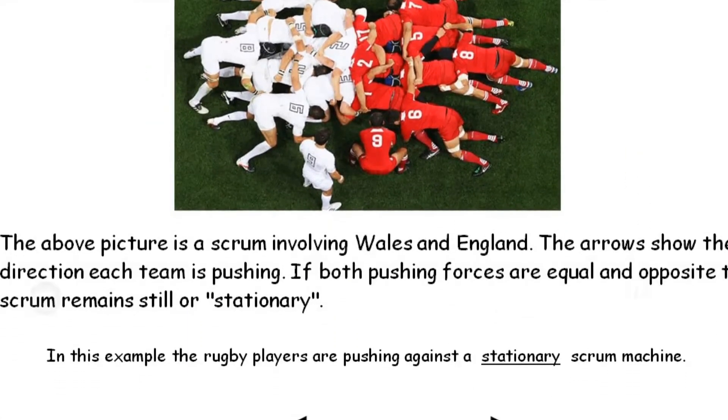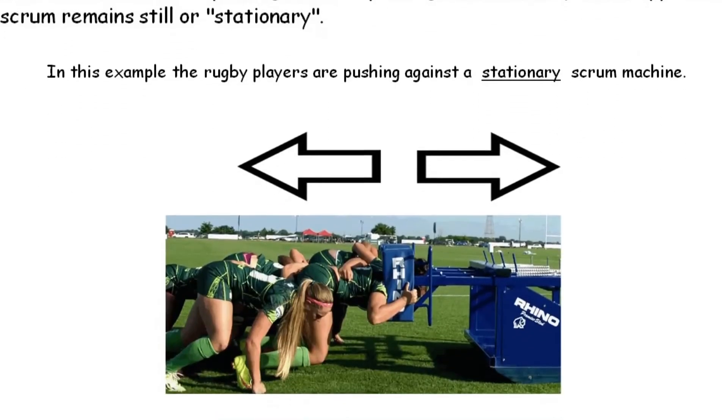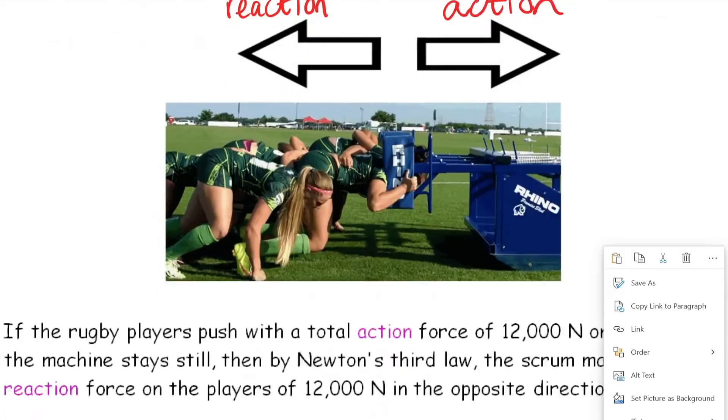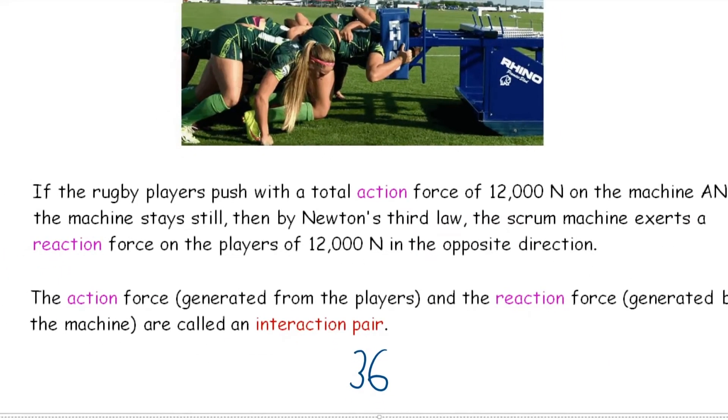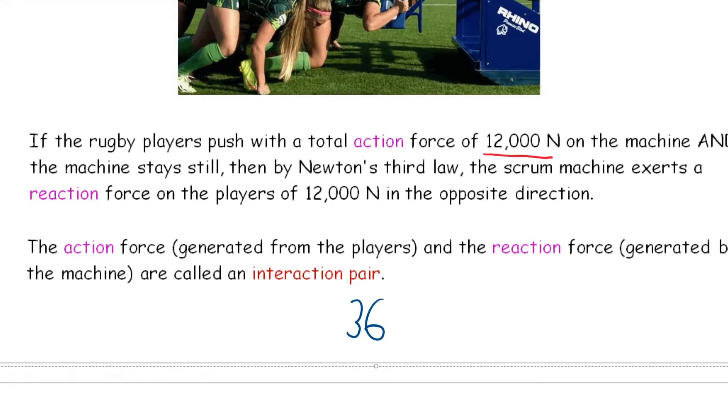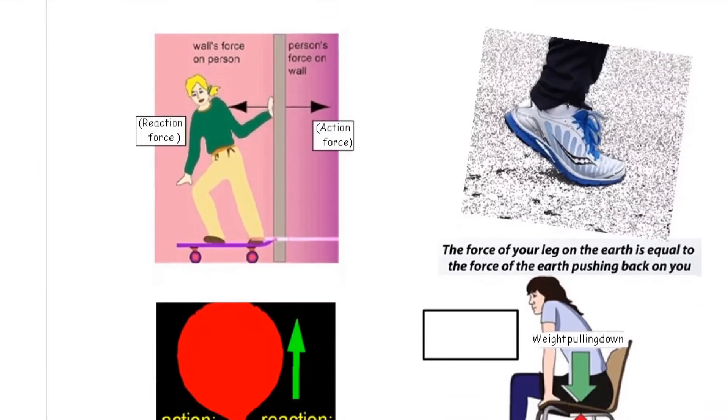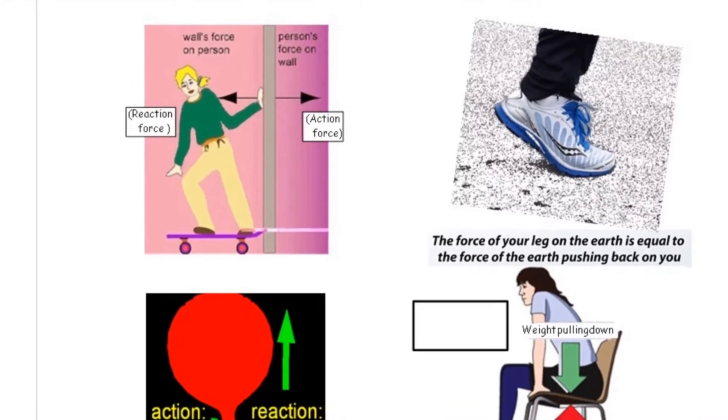When we talk about Newton's third law of motion, we talk about action and reaction. In this case the action would be the pack pushing against this scrimmage machine, and the reaction is the scrimmage machine pushing back on the pack. Again, it's stationary. If we look at this, they've given us the value of the action force and the reaction force: 12,000 newtons. You can read through that at your own pace. There's some examples here underneath.